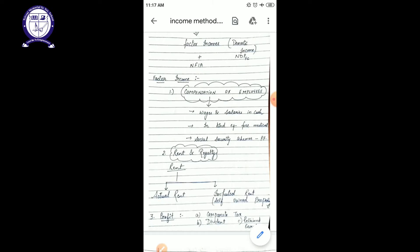That is your imputed rent. When you are living in your own house or using your own shop and not paying actual rent, but it has actual value, that is your imputed rent. Next one is your profit.